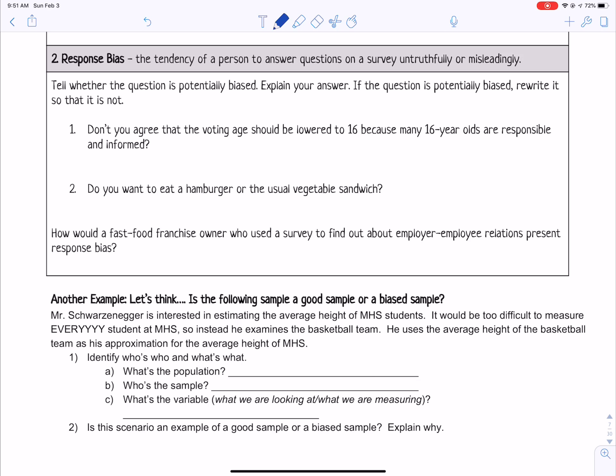So response bias is the tendency of a person to answer questions on a survey untruthfully or misleadingly. It's something that causes bias in the way they respond to your question. Tell whether the question is potentially biased, explain your answer. If the question is potentially biased, rewrite it so that it is not. Don't you agree that the voting age should be lowered to 16 because many 16-year-olds are responsible and informed? So I would say, don't you agree is trying to persuade someone to choose that.